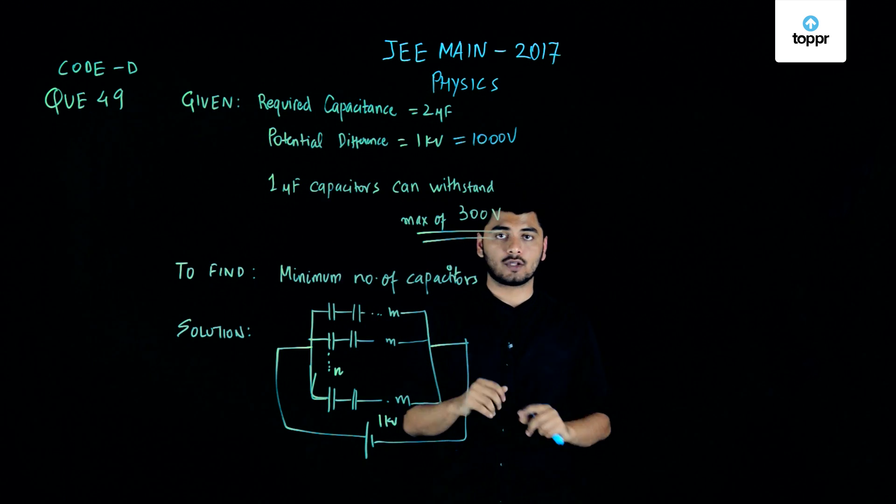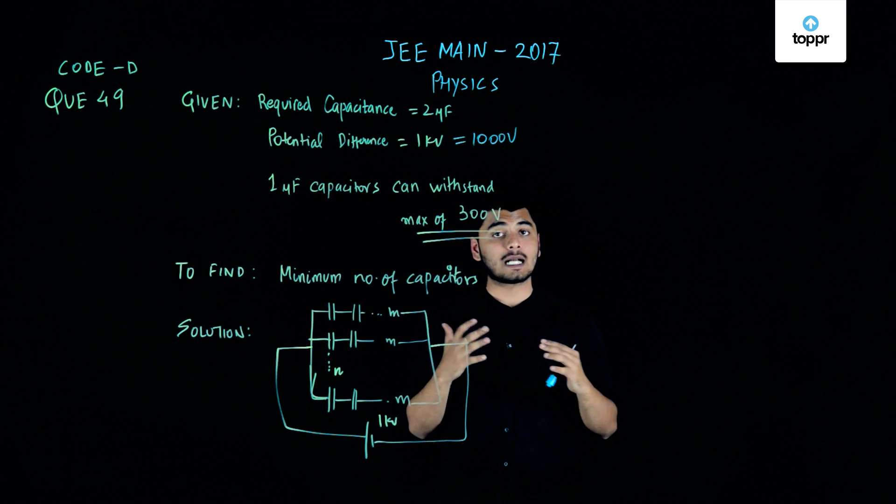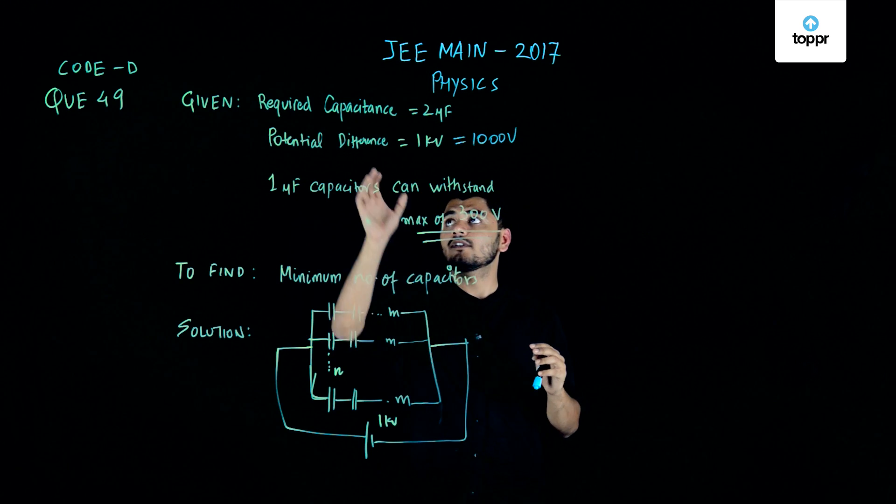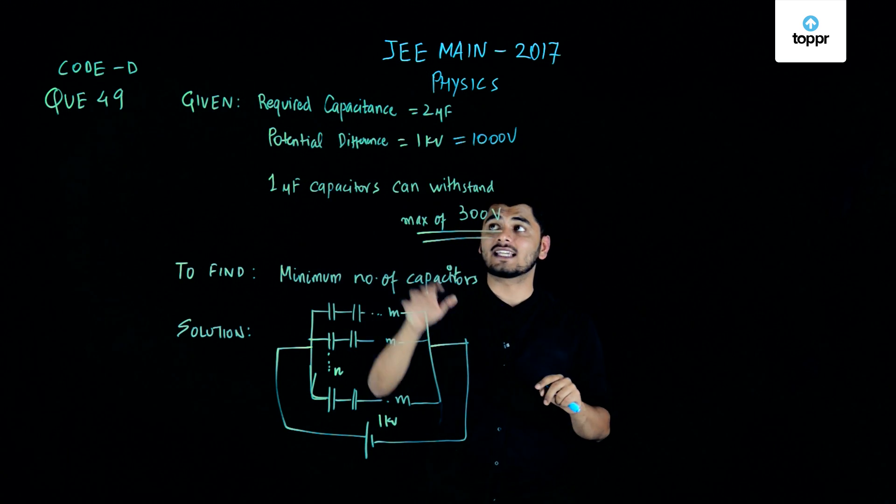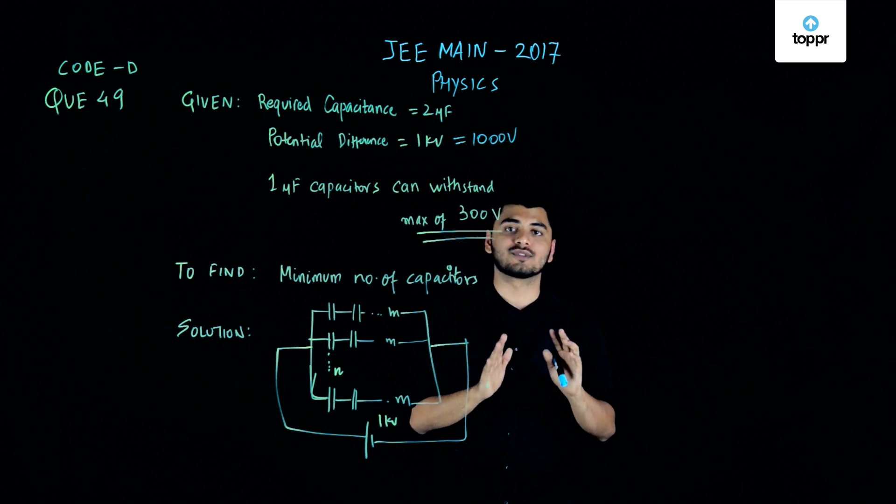Using these 1 microfarad capacitors, I need to come up with a capacitance of, required capacitance of 2 microfarads which can withstand a potential difference of 1000 volts.